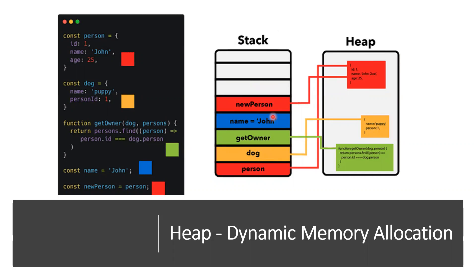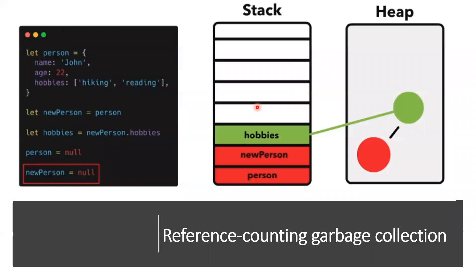This is all about memory allocation. If you understand this while writing code, you can make the right decisions — for example, assigning references to the same object so you are not recreating an object in the heap. Now we need to discuss how garbage collection works.